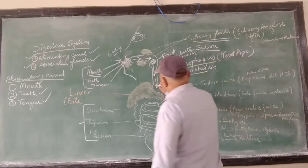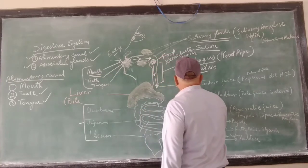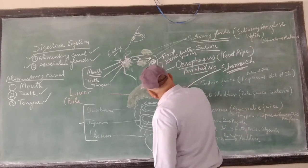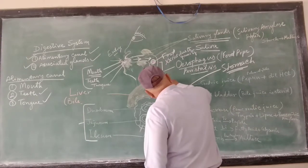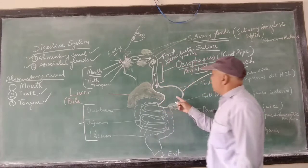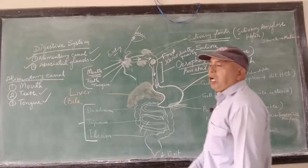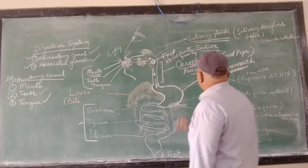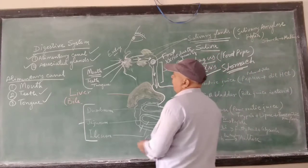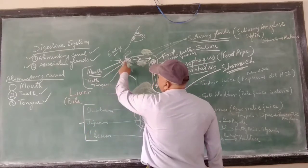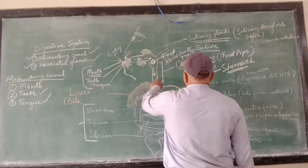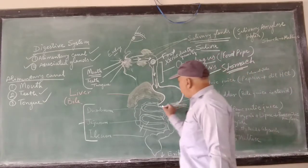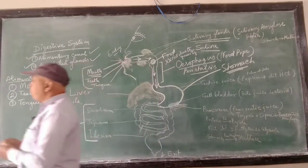The next part of the alimentary canal is the stomach — it's a bag-like structure. The food comes here into this bag-like structure. So the alimentary canal starts from mouth, teeth, tongue, then esophagus or food pipe, and the next structure is the stomach. This stomach continues as the small intestine.